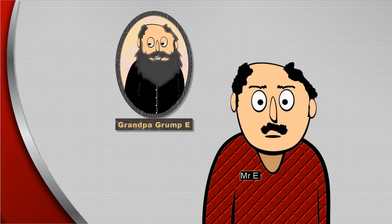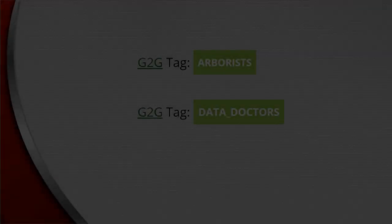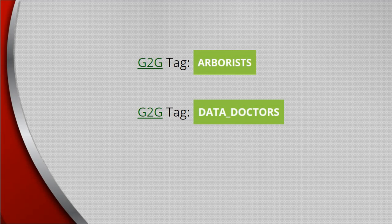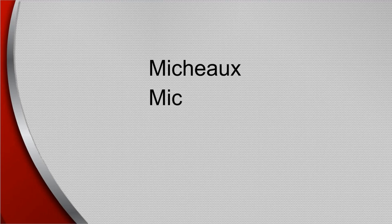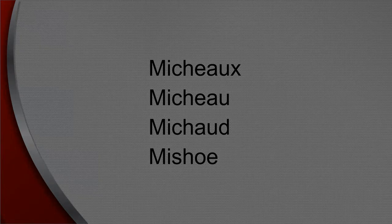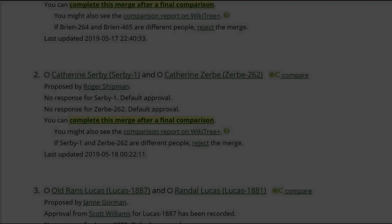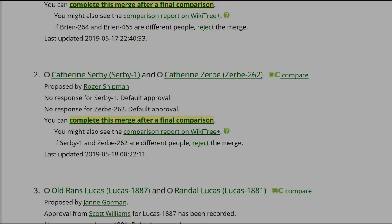That sounds pretty easy — is it? I wish it were, Mr. E, but there are some sticking points. For any sticking points, please don't guess. Post your question in the G2G forum with the arborist and data doctor tags and add the profile ID you're working with. Pay careful attention to last name at birth. Surname spellings changed when people immigrated to countries that didn't speak the family's language. Spellings changed from generation to generation and even between siblings. Use the documented spelling of last name at birth if you can find one.